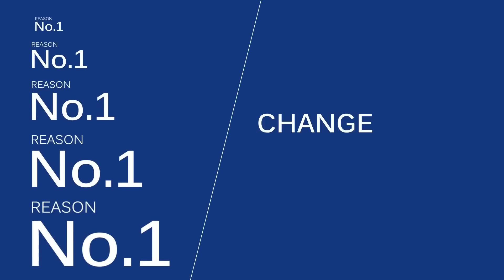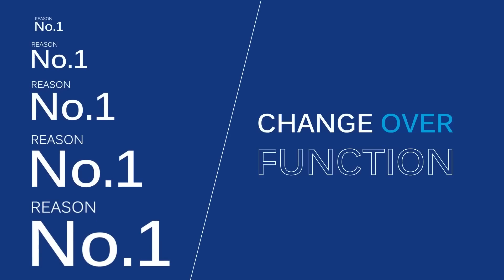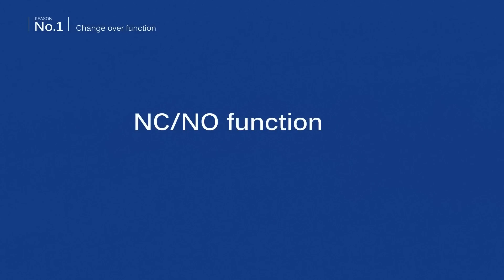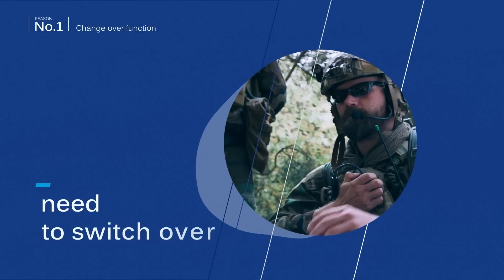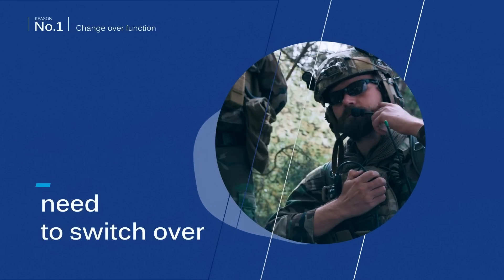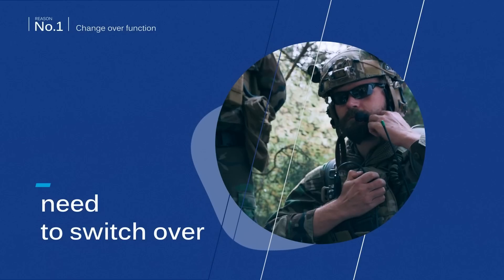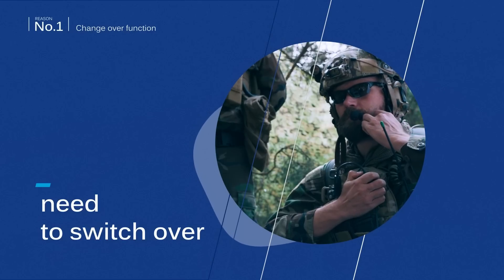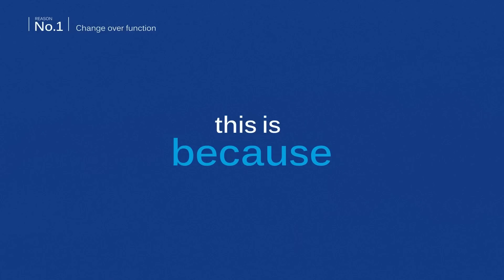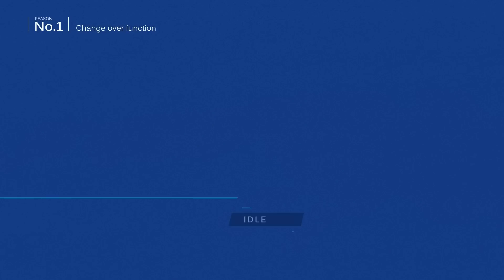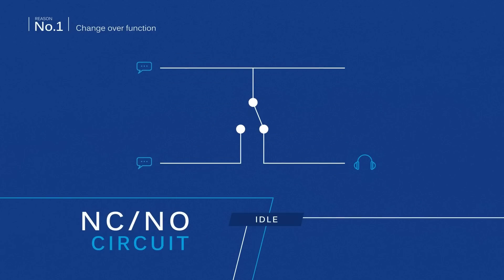Number one: change-over function. NC-NO function is a good choice when you temporarily need to switch over from one function to another, like in a push-to-talk headset. When the switch is not activated, the headphones are active and you can hear what others are saying.